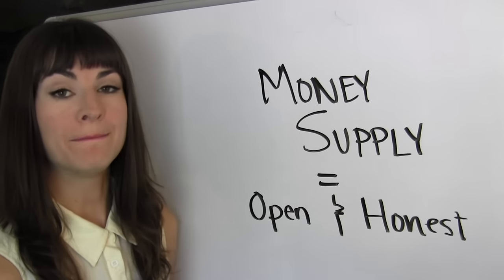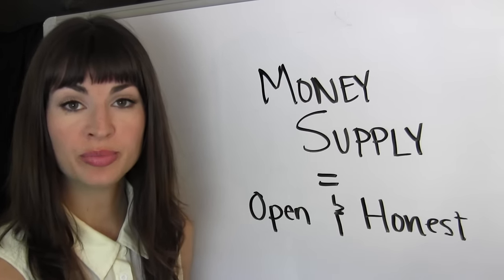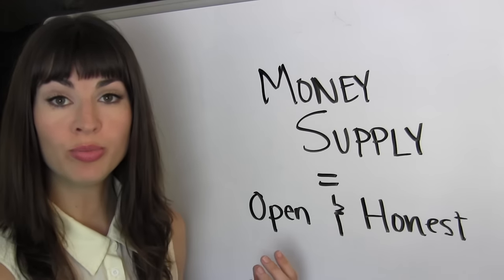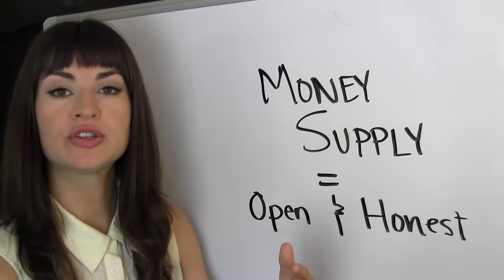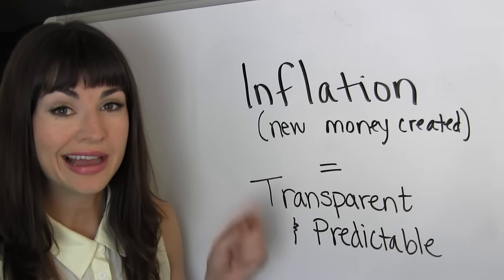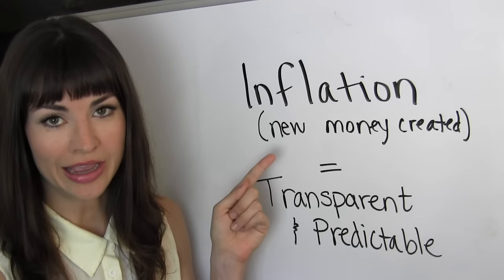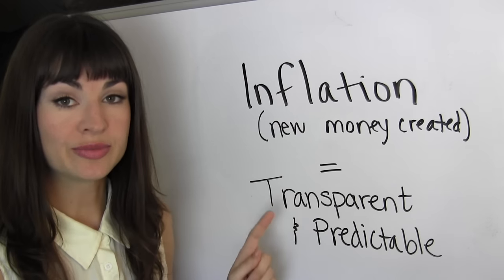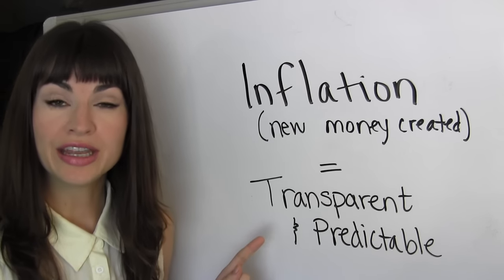In this way, our money supply, as recorded on the blockchain, can be considered open and honest. In other words, it's viewable to anybody. This also means that inflation, aka the new money created, is both transparent and predictable.